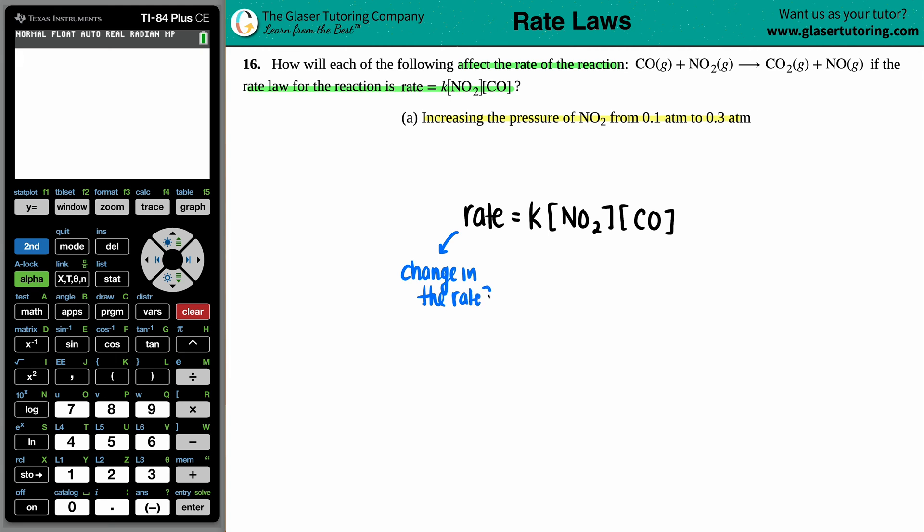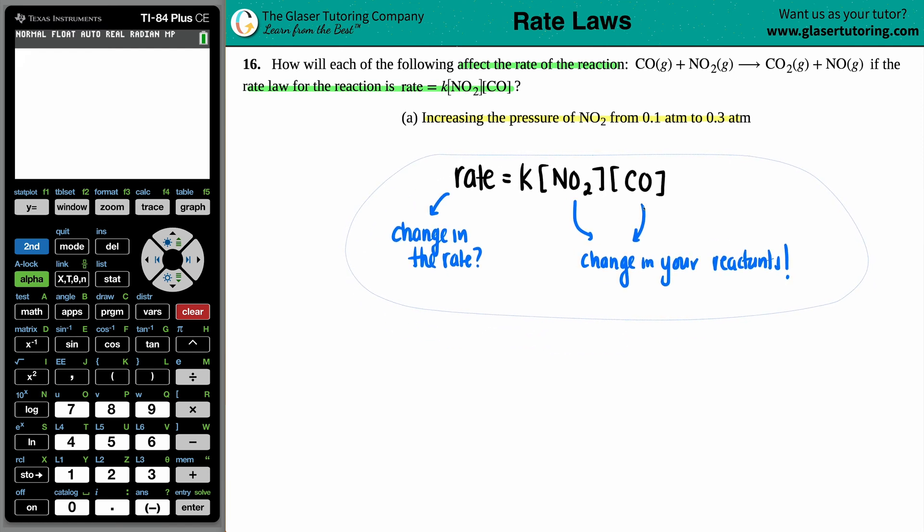Will it go up, will it go down? The change in the rate always comes from the change in your reactants that are specifically in the rate law. In this case we have two reactants in the rate law, so if you change NO₂ that's going to change the rate, and if you change CO that's going to change the rate.